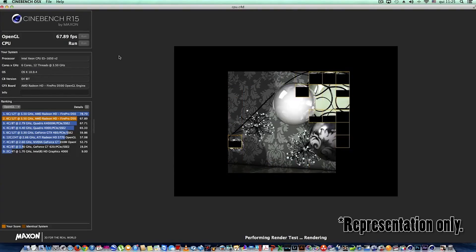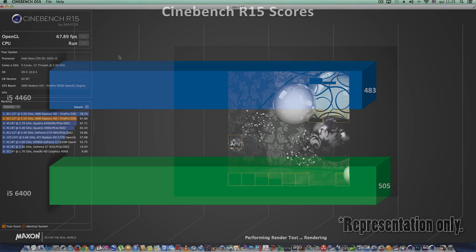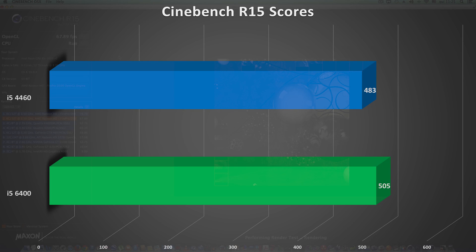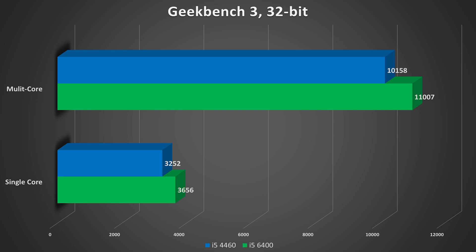The first CPU-independent test is Cinebench R15, and the scores were very similar. The i5-4460 scored 483 while the i5-6400 scored 505. Running the free 32-bit Geekbench 3 test, the 4460 achieved a single-core score of 3252 while the 6400 achieved 3656. On the multi-core side, the 4460 scored 10,158 while the 6400 scored 11,007.